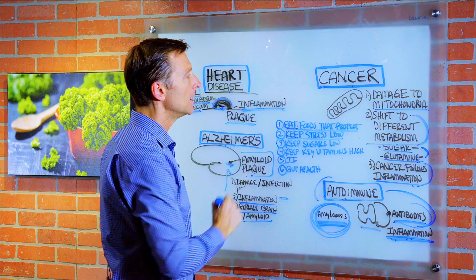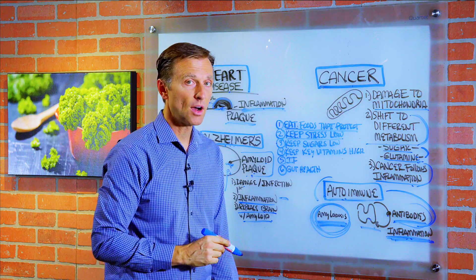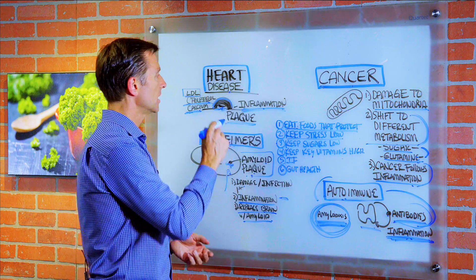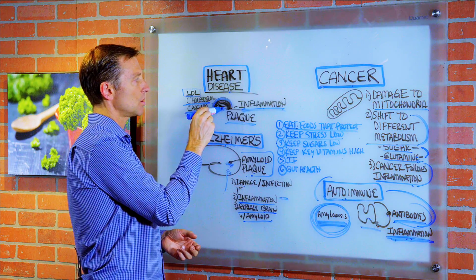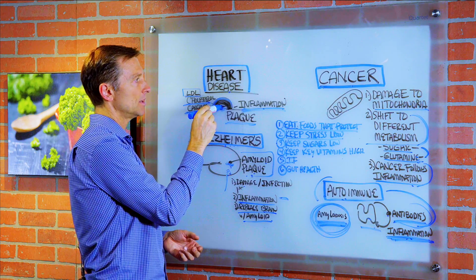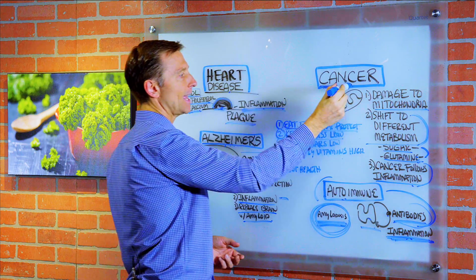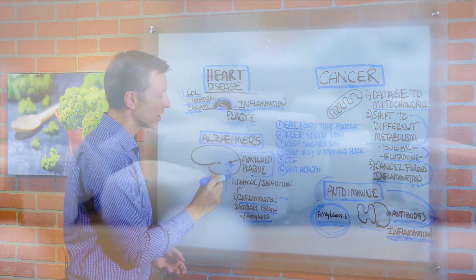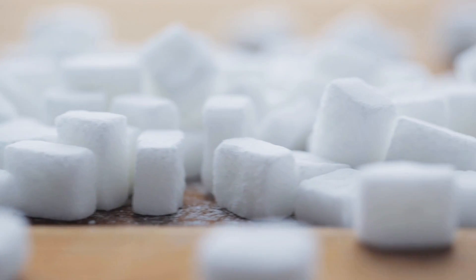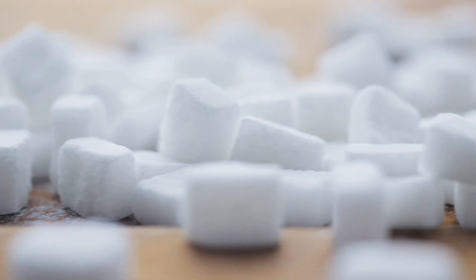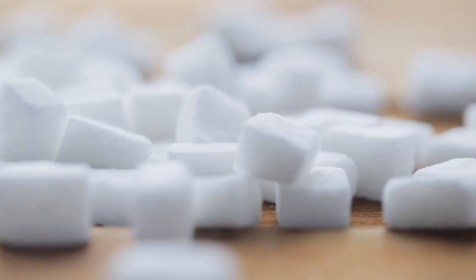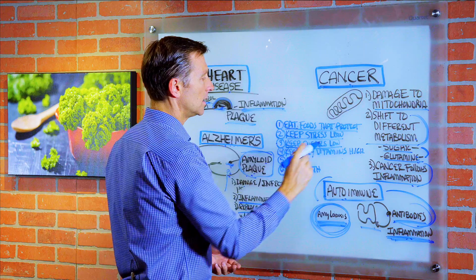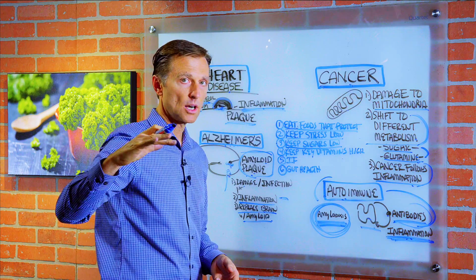Number three: keep your sugars low. High levels of sugar start the whole process in heart disease, and cancer lives on sugar. Too much sugar can also increase amyloid plaquing. Keep sugar very low — do low carb, what I call healthy keto.